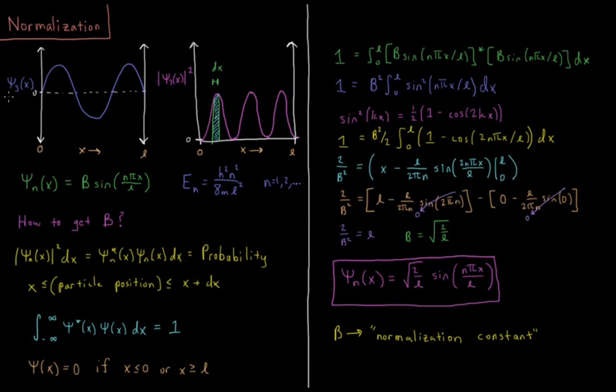So I plot it up in the top left, psi 3 of x. This is our particle-in-a-box wave function where the quantum number n equals 3, so it's going to have three waves or three humps on our sine function here.